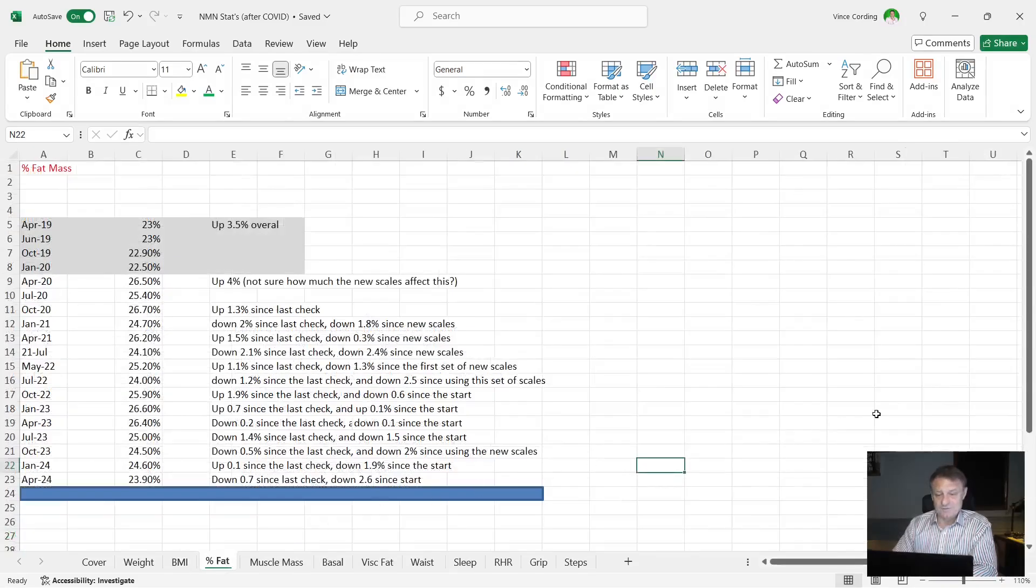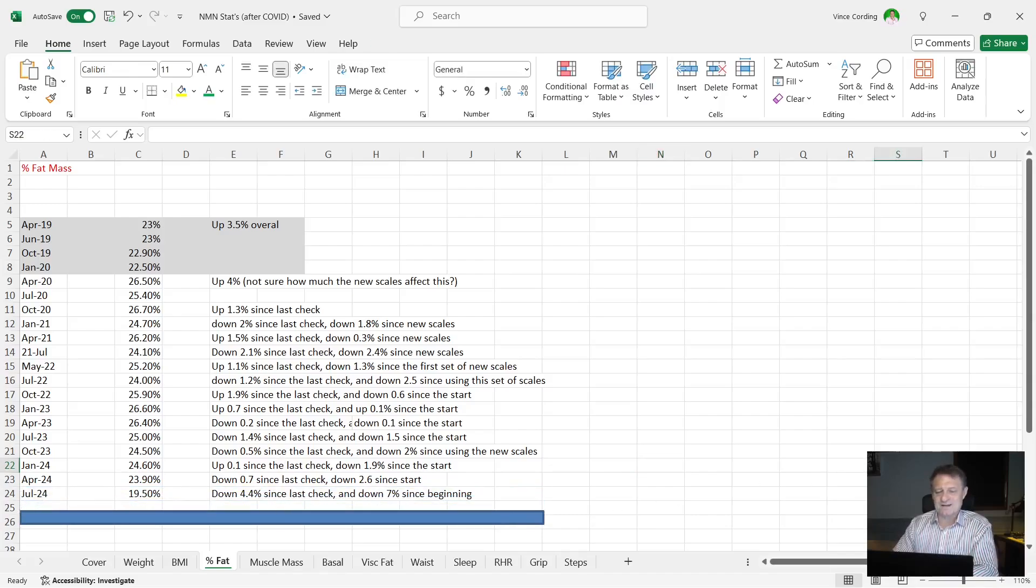Then we've got percentage body fat. You can see it was 23.90. This time it is 19.50. So I've lost 4.4% of my percentage body fat since the last check, and I'm down 7% since the beginning. So that's good. Even though I put weight on, my percentage fat mass has dropped, which I'm very happy with.